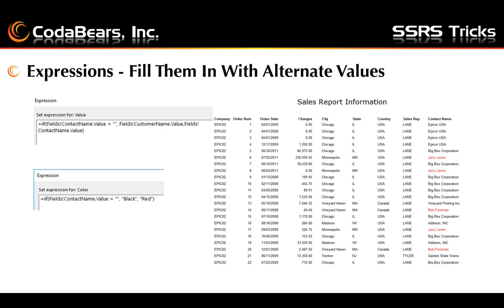So here is our first SSRS trick. Oftentimes we may have fields that only show values for some records in our query. Rather than leaving the column blank for those records, we may want to show an alternative value in that column. Here is an example where the contact name is filled in on an order sometimes and is not filled in at other times. So we can add a formula to show the contact name if available, otherwise show the customer name. In addition, I added an expression on the text box properties to color code the customer name as black and the contact name as red.